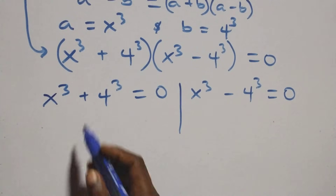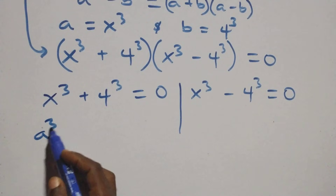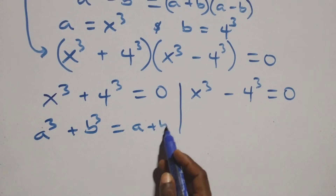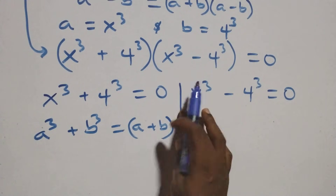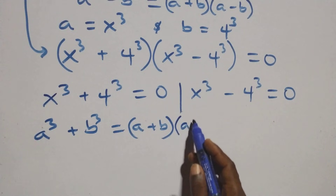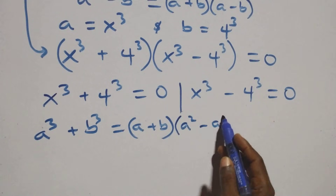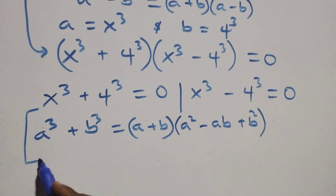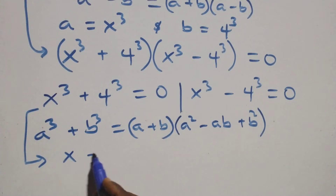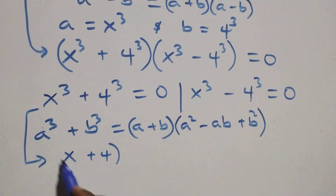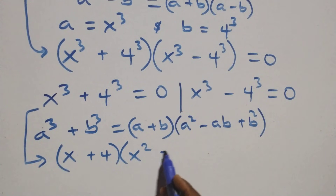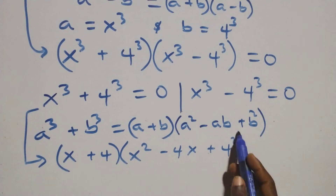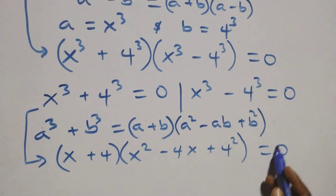Solving this side: a³ + b³ is the same thing as (a + b)(a² - ab + b²). So this becomes (x + 4)(x² - 4x + 4²) equals to 0, which gives (x + 4)(x² - 4x + 16) = 0.